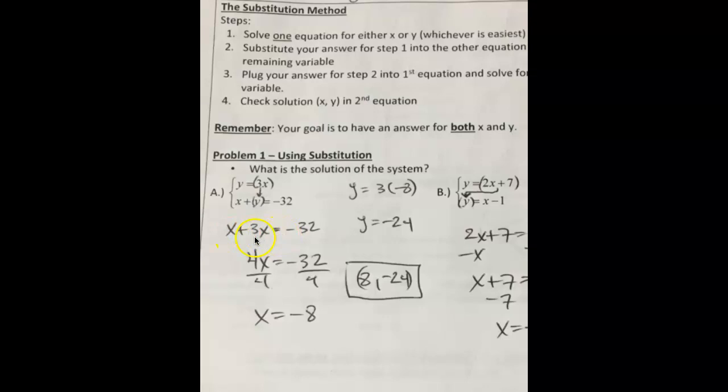Once you substitute, you're solving it like a regular equation. x plus 3x is 4x, 4x equals negative 32, divide both sides by 4, x equals negative 8. Once you get that answer, you have to substitute it into one of the original equations. I took the equation y equals 3x, substituted negative 8 in for x, and calculated y equals negative 24. Then you write the answer as x comma y: negative 8 and negative 24.